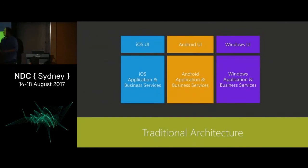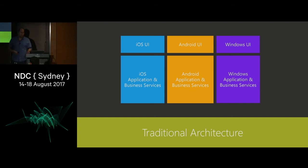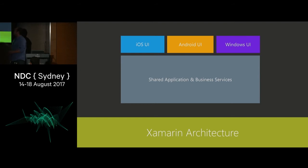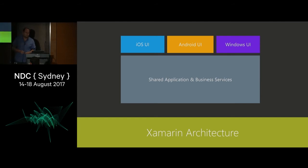What does this lead us to in terms of architectures? If we want a traditional approach where we write for three platforms, we end up with a siloed approach — one app in Objective-C, one in Java, one in C#, sharing no code. We'll write the same bug three times, have to test it three times, and probably only fix it two and a half times. Xamarin gives us something different: we're still writing three separate user interfaces natively, but now sharing our application and business services across all of them.